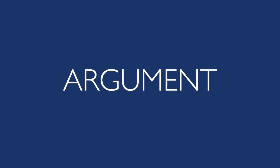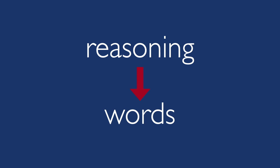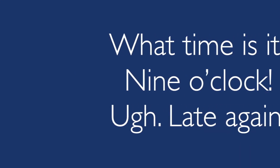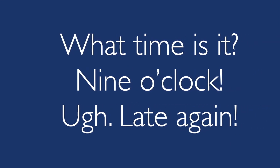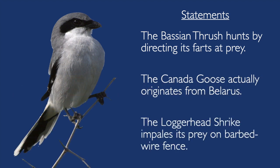In logic, argument is a technical term — it's not two people yelling at each other. An argument is just a piece of reasoning put into words. Fundamentally, an argument is a group of sentences, but not questions or exclamations. We need statements: sentences that put forward a claim as true. Statements might be true, false, or a mix, but they put forward claims we can evaluate — and that's the hallmark of a statement.